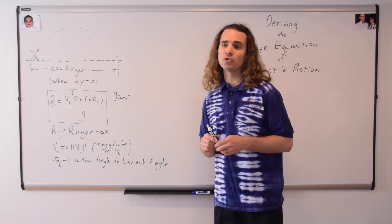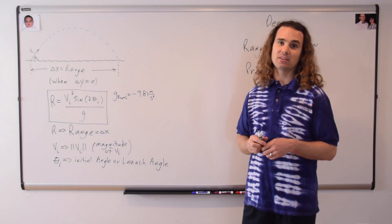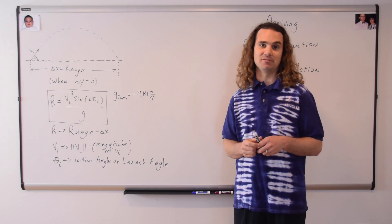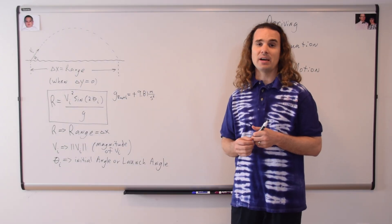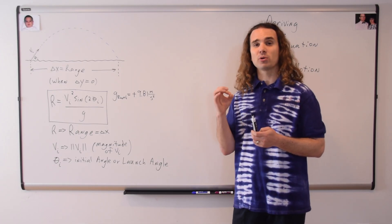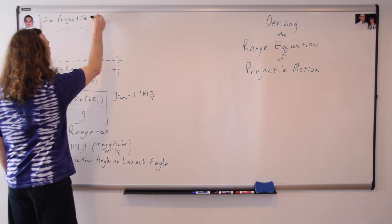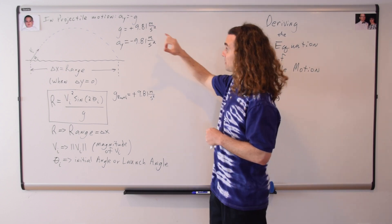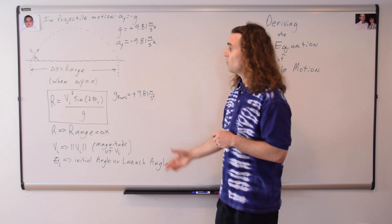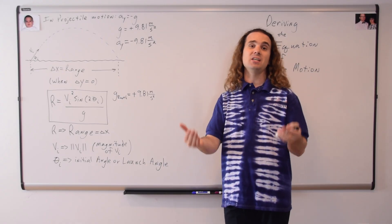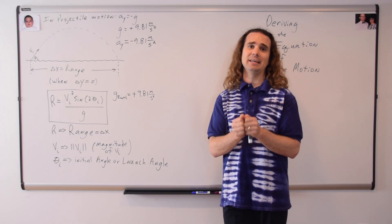Bo, what is the value of little g, the acceleration due to gravity here on planet Earth? Negative 9.81 meters per second squared. Which is exactly why I asked the question, because your answer is not correct. The acceleration due to gravity here on planet Earth is positive 9.81 meters per second squared. The confusion arises from the fact that the first time we use little g is when we define the acceleration due to gravity in projectile motion. Remember, in projectile motion, the acceleration in the y direction is equal to negative g, where g on planet Earth is a positive 9.81 meters per second squared. Therefore, the acceleration in the y direction is equal to negative 9.81 meters per second squared. Again, because g is a positive number — please remember that g is positive.